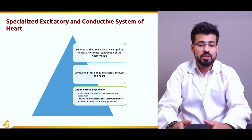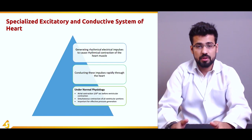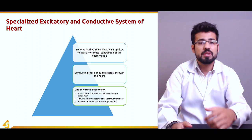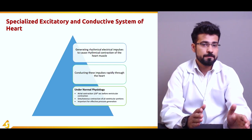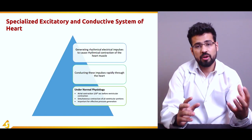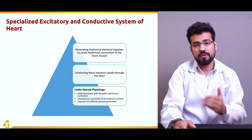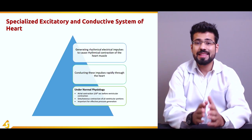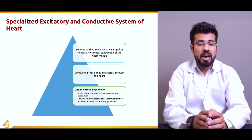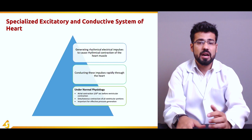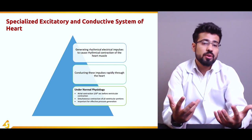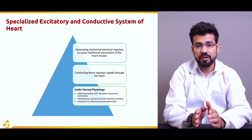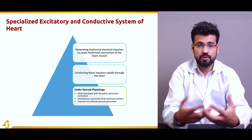Under normal physiological conditions, atrial contraction occurs first, and there is a delay of one-sixth of a second before the ventricles contract. When the atria contract, blood is shifted from the atria into the ventricle. This one-sixth of a second gap between atrial and ventricular contraction plays a very important function: without this gap, there would be no time for the ventricles to fill with blood.